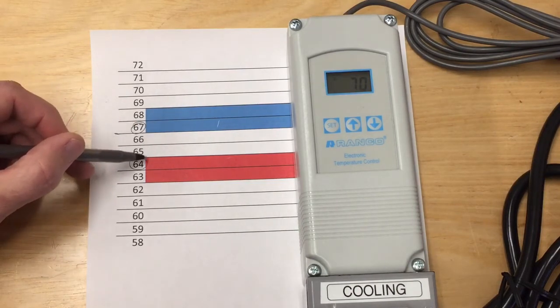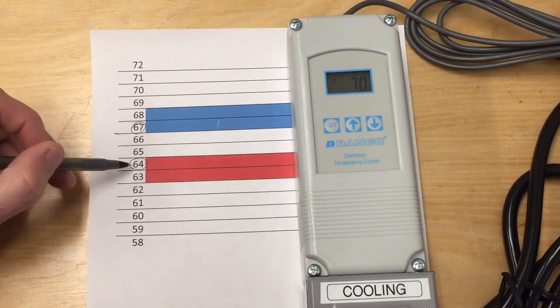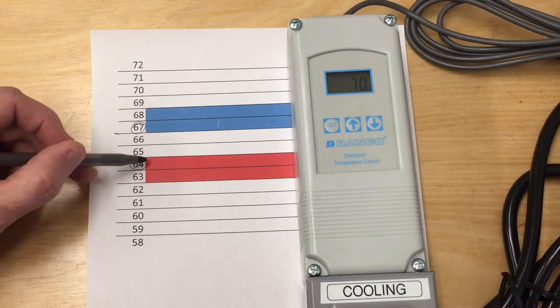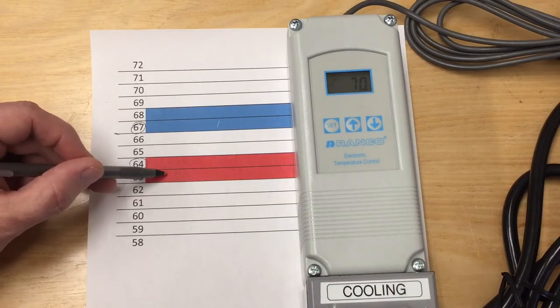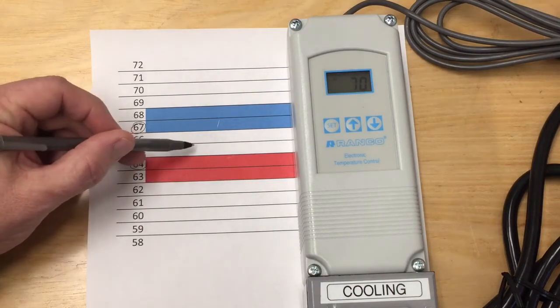Now if the temperature drops, I set 64 degrees on the heating side with a two-degree differential, so it'll go as low as 62 and the heater will turn back on, keeping me in this band as well.